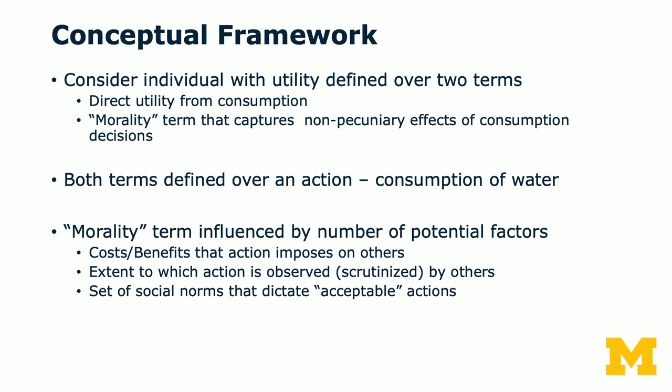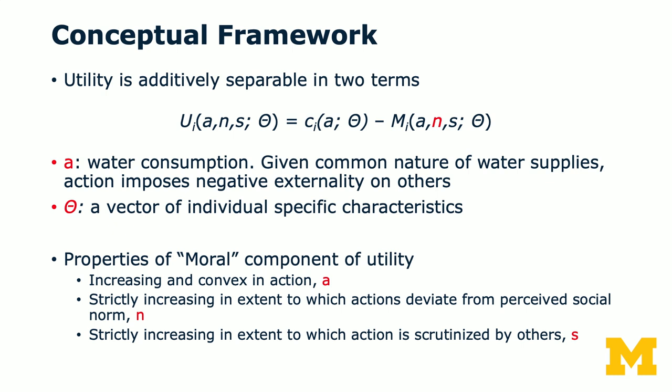The randomization serves as an instrument that permits evaluation of treatment effects relative to a control condition. It also provides conservative tests of the ability to harness pro-social preferences to achieve policy goals. This study considers individuals with utility defined over two terms. One is consumption utility. The other is a morality term that captures non-pecuniary effects of consumption decisions. Both terms are defined over an action — consumption of water in this context. The morality term is influenced by factors such as the costs and benefits the action imposes on others, the extent to which the action is observed or scrutinized by others, and the set of norms that dictates the acceptability of the actions.